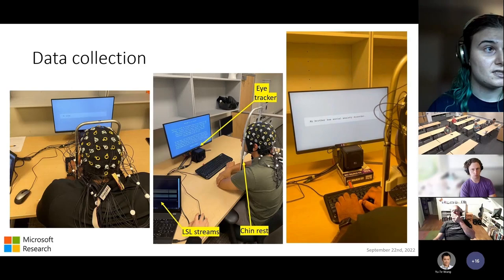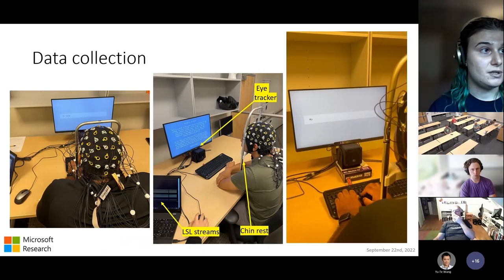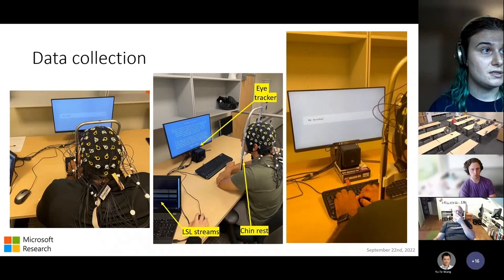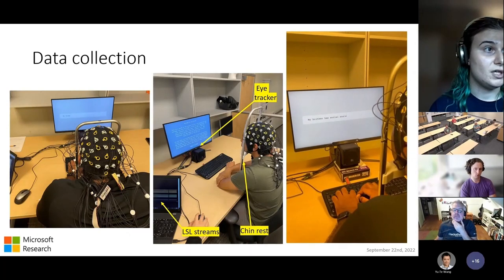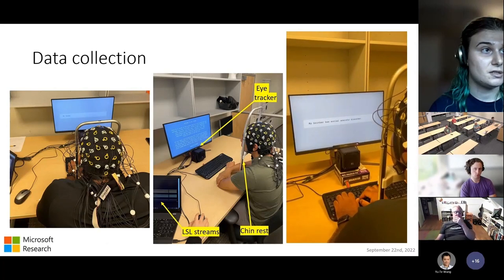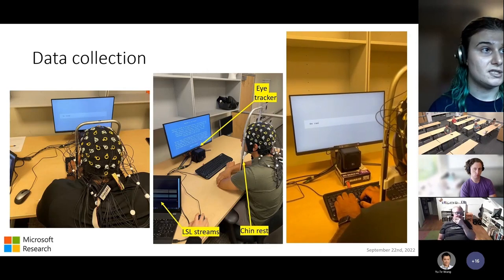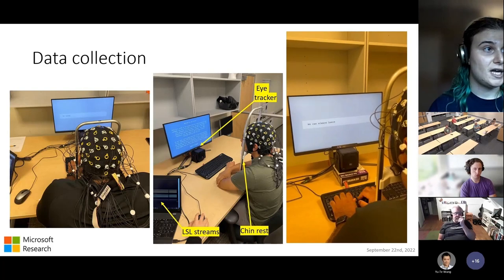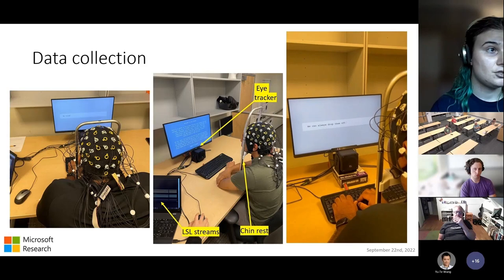In the video, we see the target sentence displayed on screen, followed by a mask. When it disappears, the participant begins typing. A correct generation appeared, so he accepted it with Tab and continued to type the remainder of the sentence, then hit Enter when done. After a pause, a new sentence appeared for the next trial. This time, the generated word was incorrect or a mismatch, so he just typed the word normally.